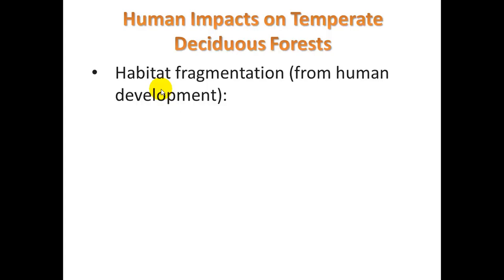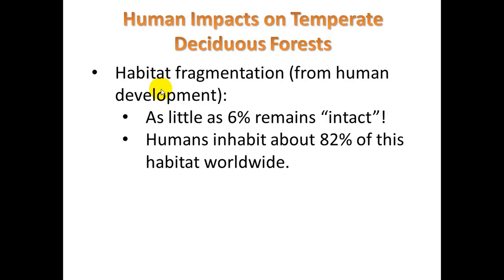Human impacts on temperate deciduous forests: the biggest one is habitat fragmentation from human development. As little as 6% remain intact, and humans inhabit about 82% of this habitat worldwide. The eastern part of our country is very densely populated, as is Europe.